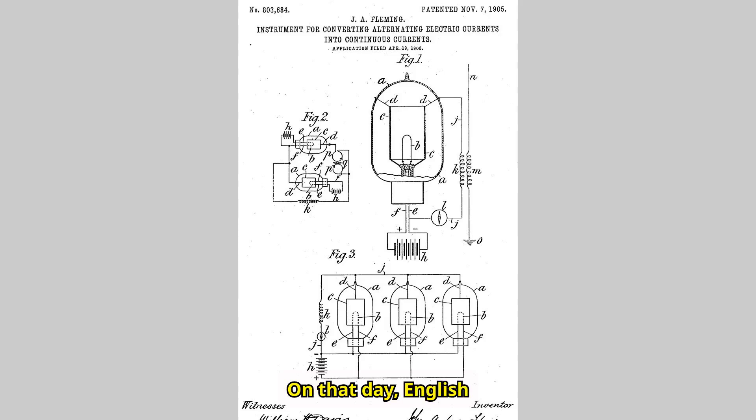On that day, English engineer John Ambrose Fleming received a patent for the thermionic valve, or what we now call the vacuum tube. This unassuming device became the cornerstone of the electronics revolution, a bridge between the industrial age and the digital era.